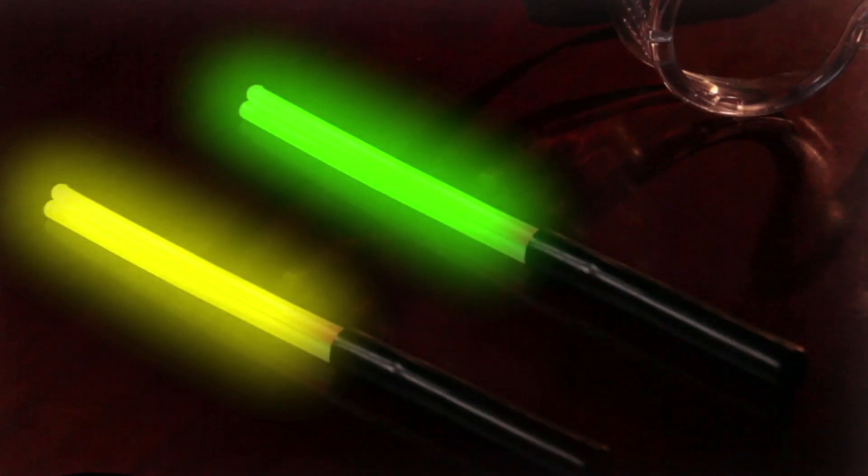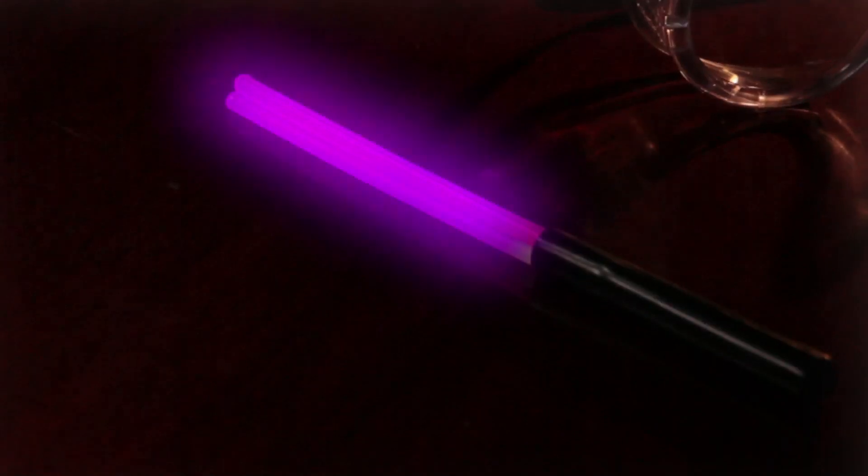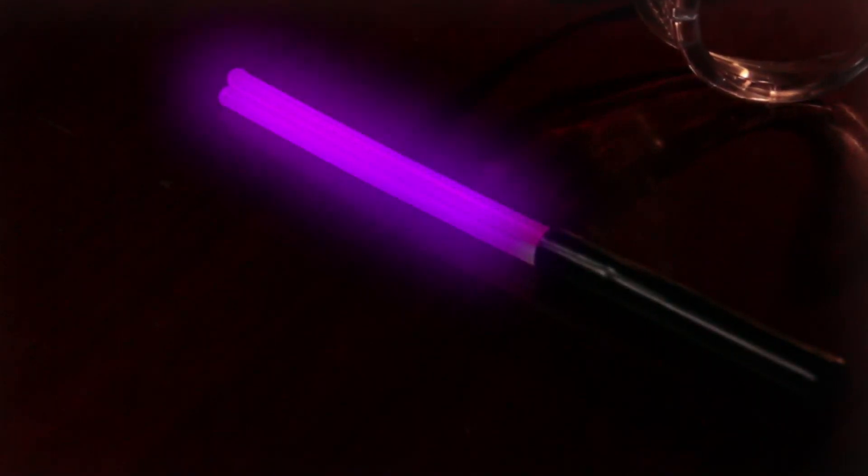Green and yellow glow sticks are a piece of cake. Reds are a bit tougher to produce. Purple, made from a combination of three dyes, is the most difficult color of all.